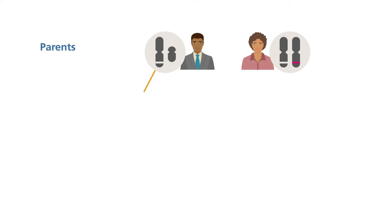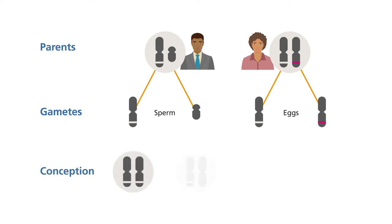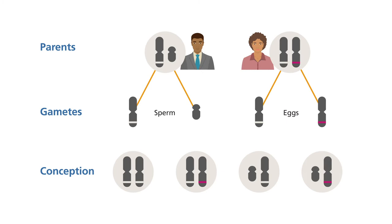A parent passes on one from each pair of their chromosomes to each child, and which one they pass on is down to chance. There are therefore four possible combinations of sex chromosomes that the children of this couple could inherit.